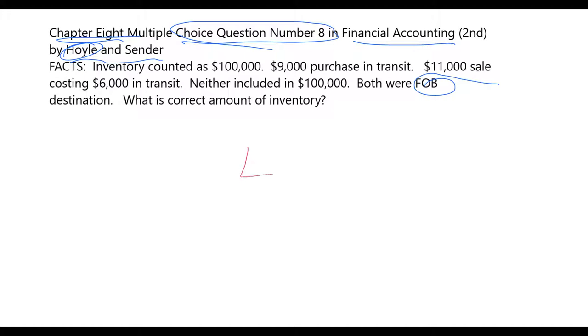We know that we have a company and that company has counted its inventory and the company has discovered inventory of $100,000. That was the cost of this inventory.